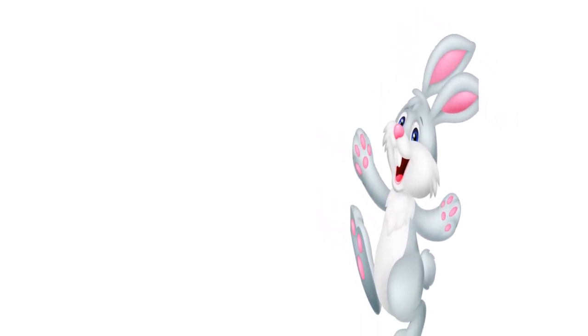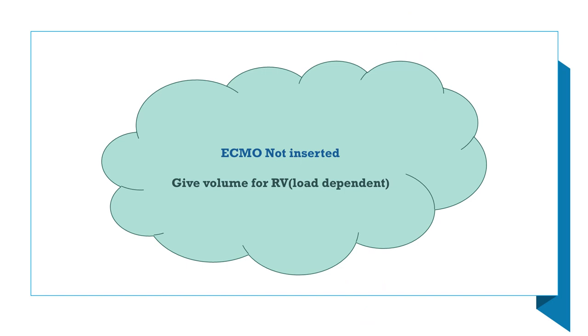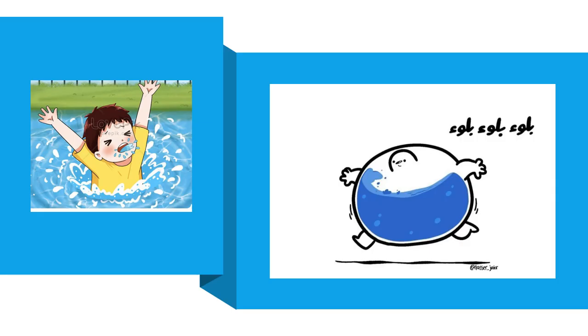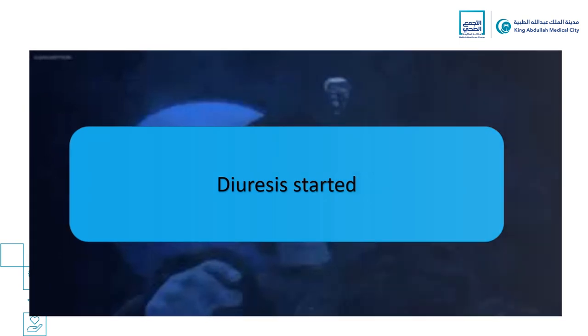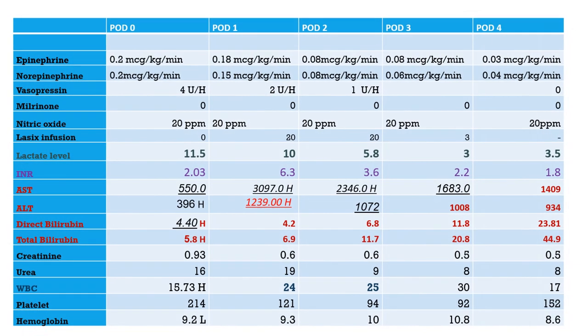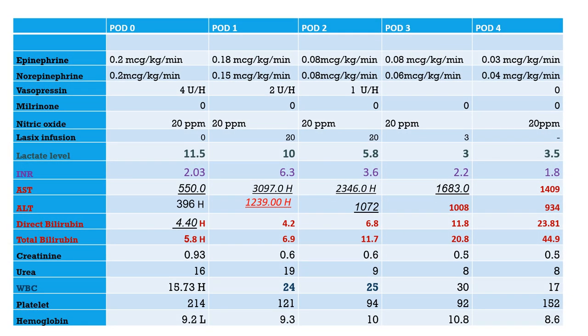The discussion focused on whether to insert ECMO. The decision was made not to insert ECMO. Instead, volume would be given for the RV, as it is load-dependent. Volume loading was administered, and when the patient appeared to be volume-overloaded, diuresis was started.